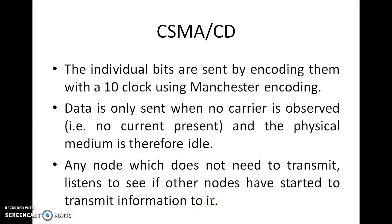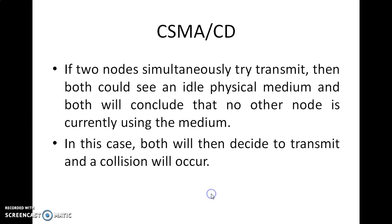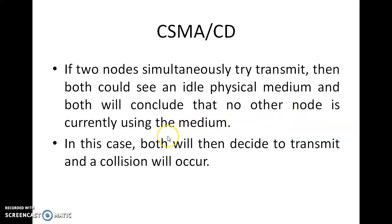It will sense if there is any current; it will stop, otherwise it will see whether it can transmit or not. If two nodes simultaneously try to transmit, both could see an idle physical medium and both will conclude that no other node is currently using the medium. In this case, both will then decide to transmit and a collision will occur.